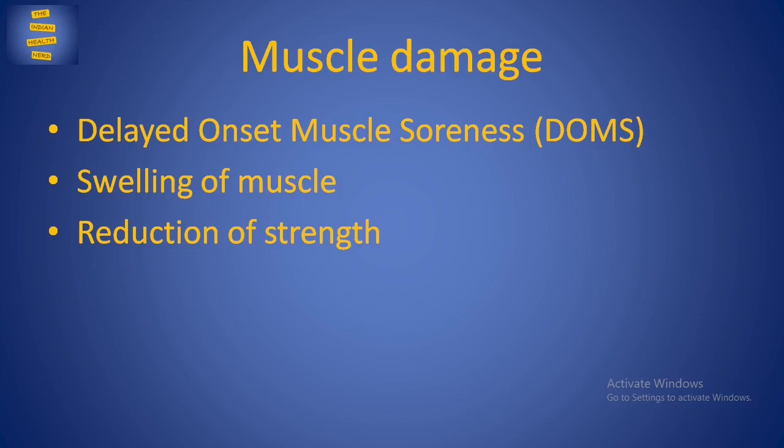Muscle damage may be the main reason for developing overtraining syndrome. During exercise, muscles are damaged, and this damage is responsible for the reduction of strength, swelling, and the delayed onset muscle soreness (DOMS) after exercise. Muscle damage is especially severe after repeated eccentric muscle contractions or lengthening. The muscle damage after exercise can last for prolonged periods, even months, which can explain the prolonged nature of symptoms seen in overtraining.